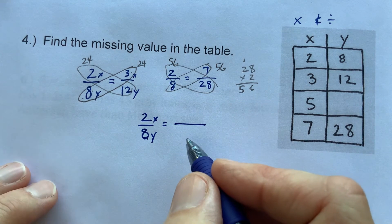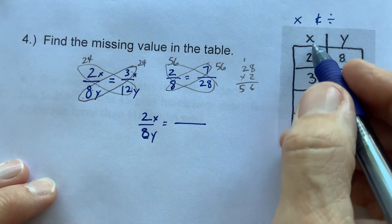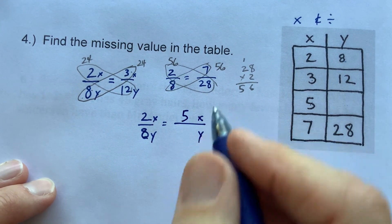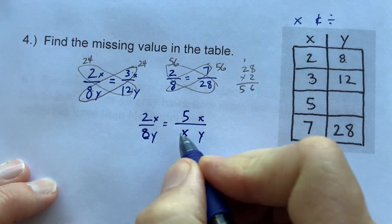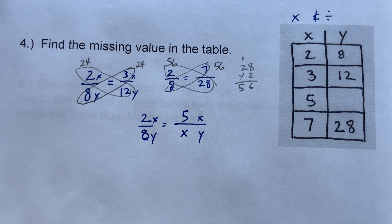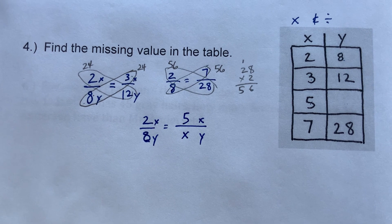5 is in the x column. x is on top, y is on the bottom. So the 5 is going to go here. This will find us what the y is. Cross multiply and divide and you will have the answer. Great job, we'll see you on the next one.